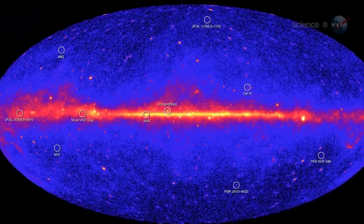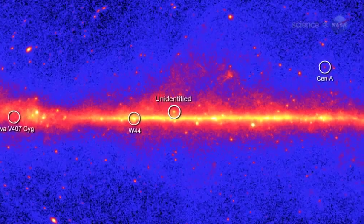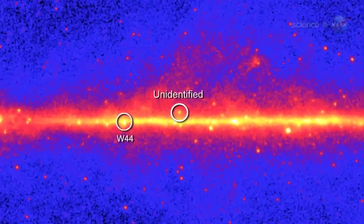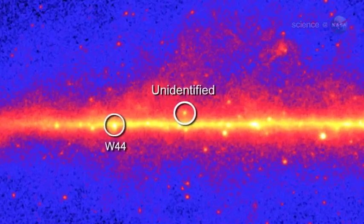The Fermi team recently released the second catalog of gamma-ray sources detected by their satellite's Large Area Telescope. Of the 1,873 sources found, nearly one-third are complete mysteries. No one knows what they are.